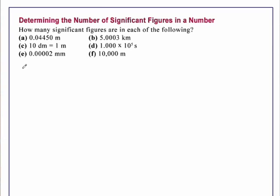In the first example, we have the number 0.04450 meters. It has zeros at the beginning that are merely holding the decimal place, and therefore they're not counted.